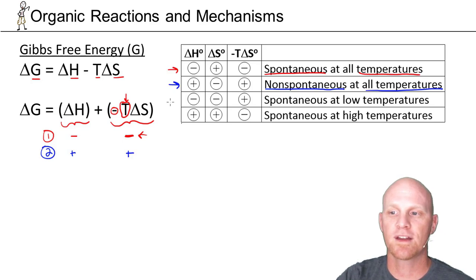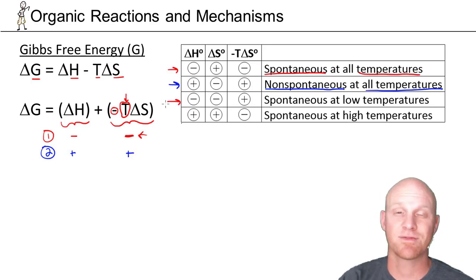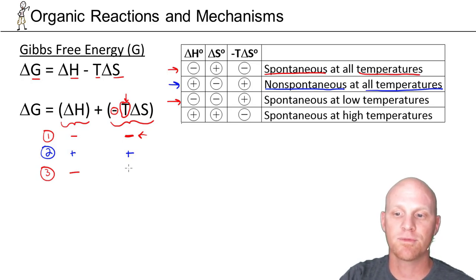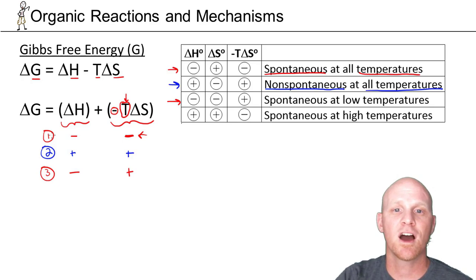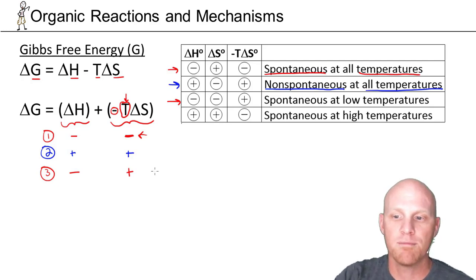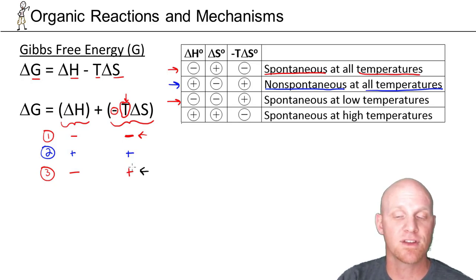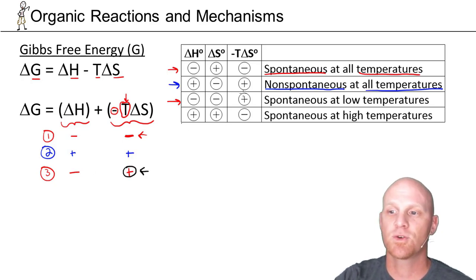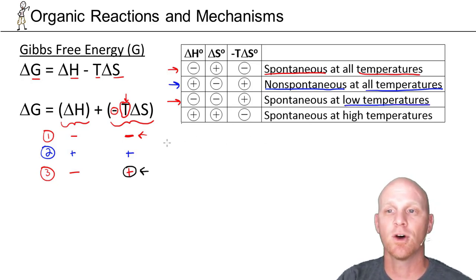In the last two situations, there's a temperature dependence when delta H and delta S have the same sign. In situation three, both delta H and delta S are negative. Delta H is negative, but negative T delta S comes out positive. To get delta G negative, we want to minimize that positive second term — and we can do that by using low temperatures. At low temperatures, the positive term is small and the negative delta H dominates, so this reaction is spontaneous at low temperatures.